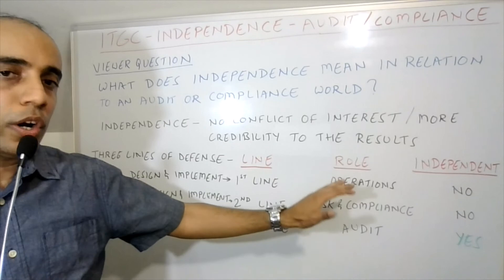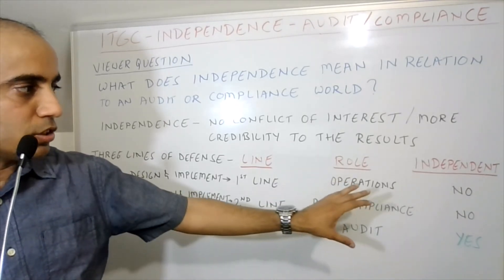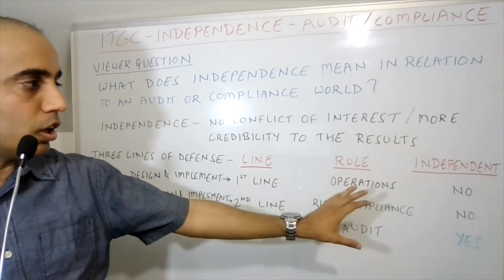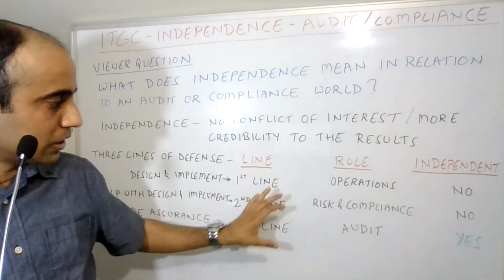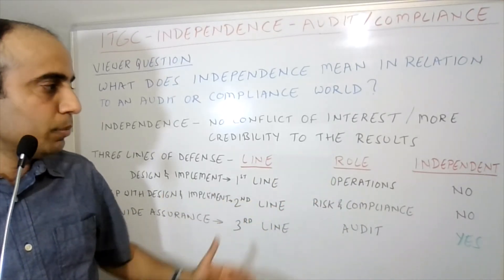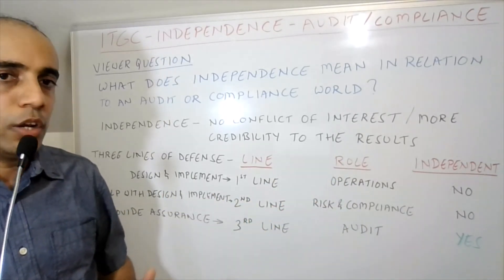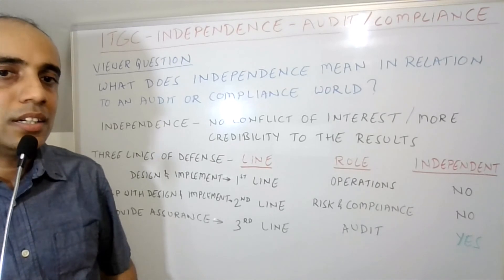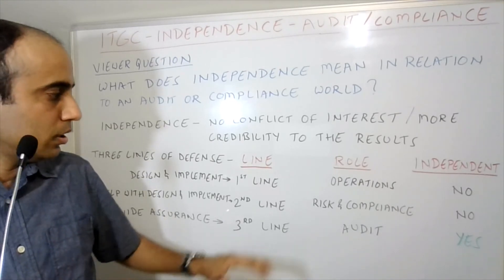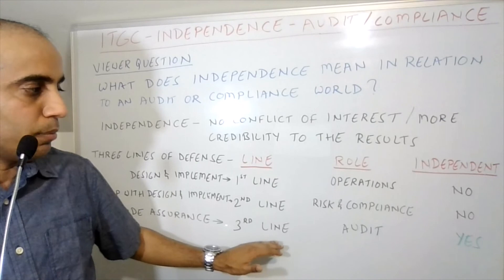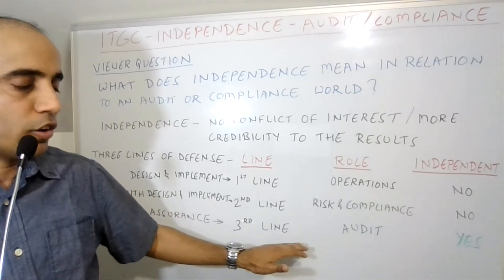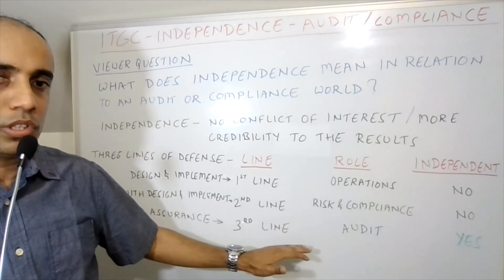From an audit lens, if you look at the third column, it's a 'No' for both the first line and second line, because they are involved in setting up the environment and cannot attest it — that's what the independence audit lens means. But it's a 'Yes' for the third line because they have no conflict of interest and no business interest.